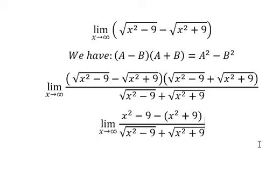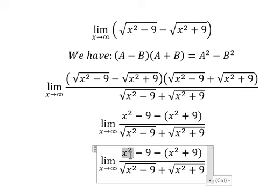Next, we have x squared minus x squared. We can solve: negative nine minus negative nine. We have negative 18.